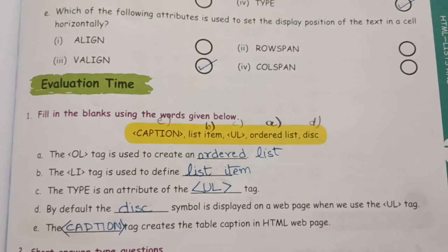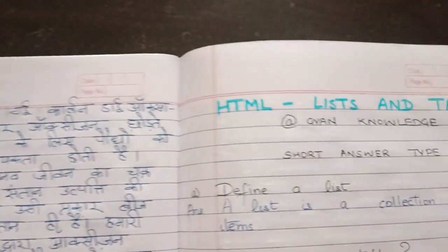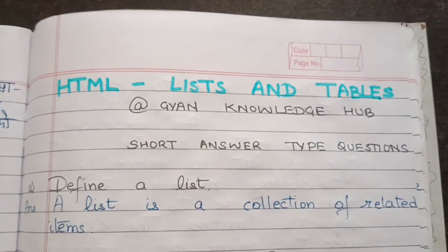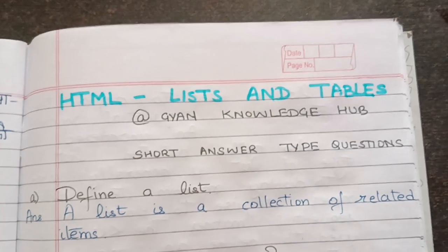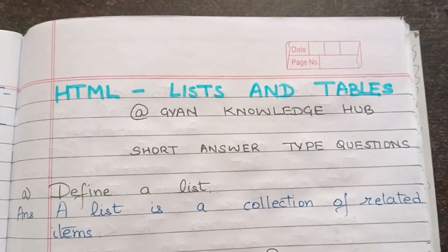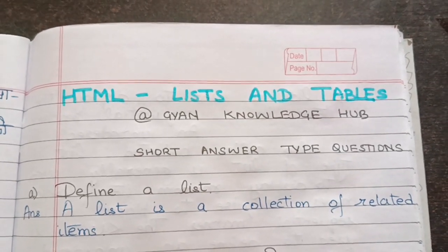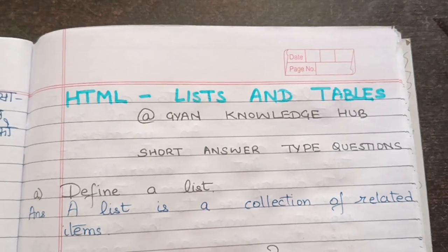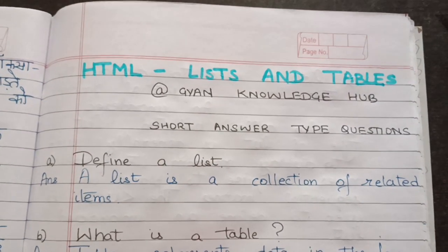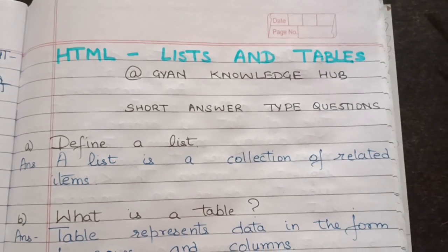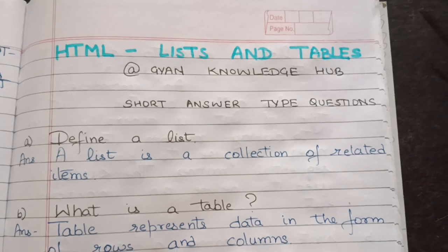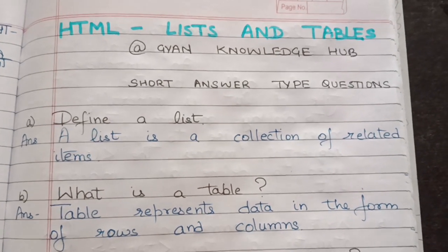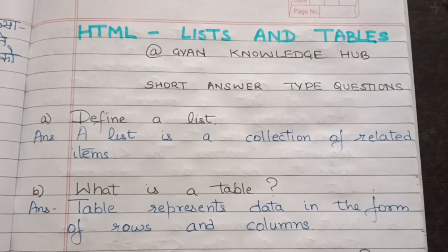Now we come to the question answers — short answer questions. The first question is: define a list. A list is a collection of related items. Next: what is a table? A table represents data in the form of rows and columns.